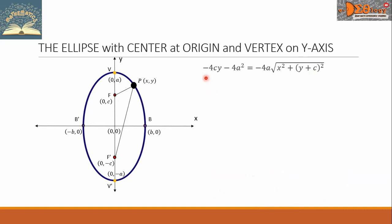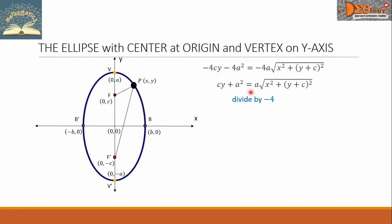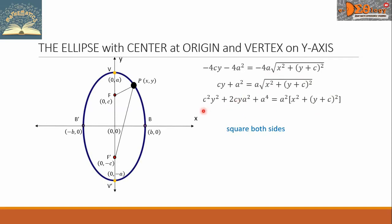We can see that there is a common constant we can cancel. Let us divide this equation by -4. So we have: cy + a² = a times the big radical. Let us cancel the radical by squaring this equation again. So (cy + a²)², when we square this binomial, gives: c²y² + 2cya² + a⁴ equals...